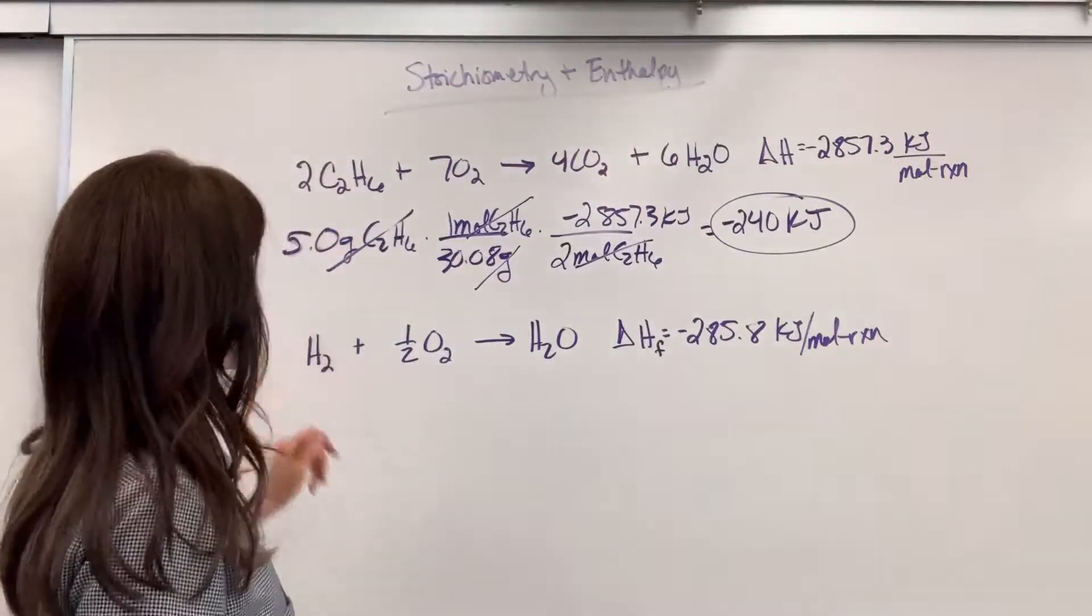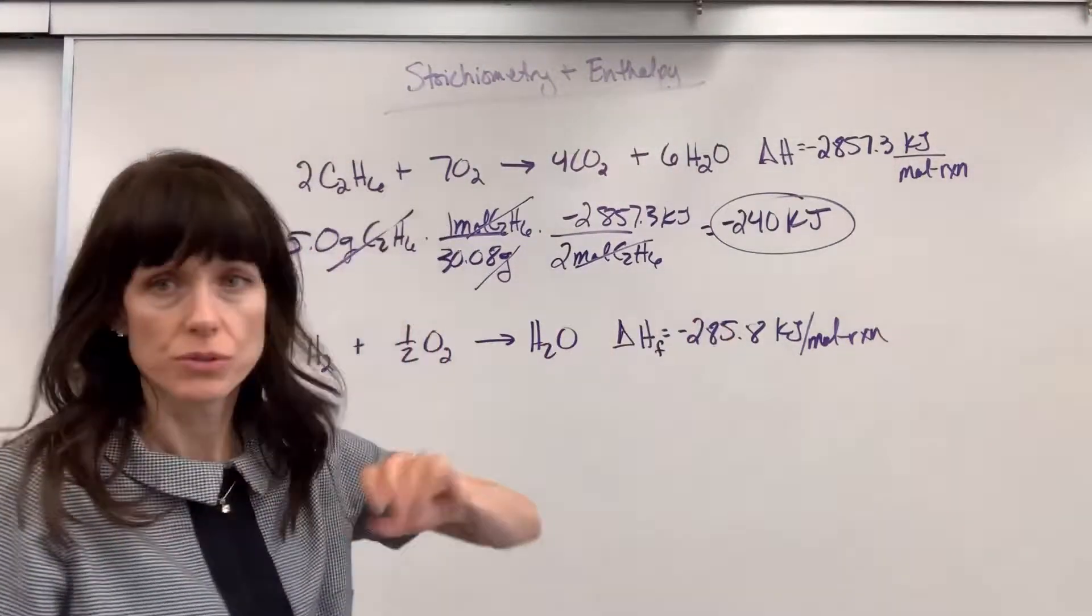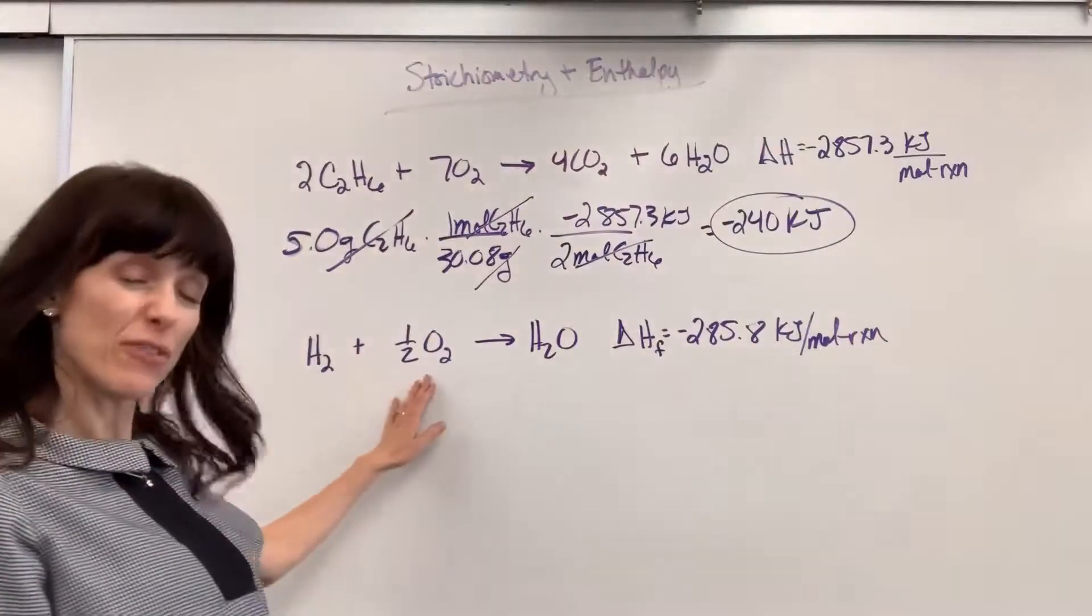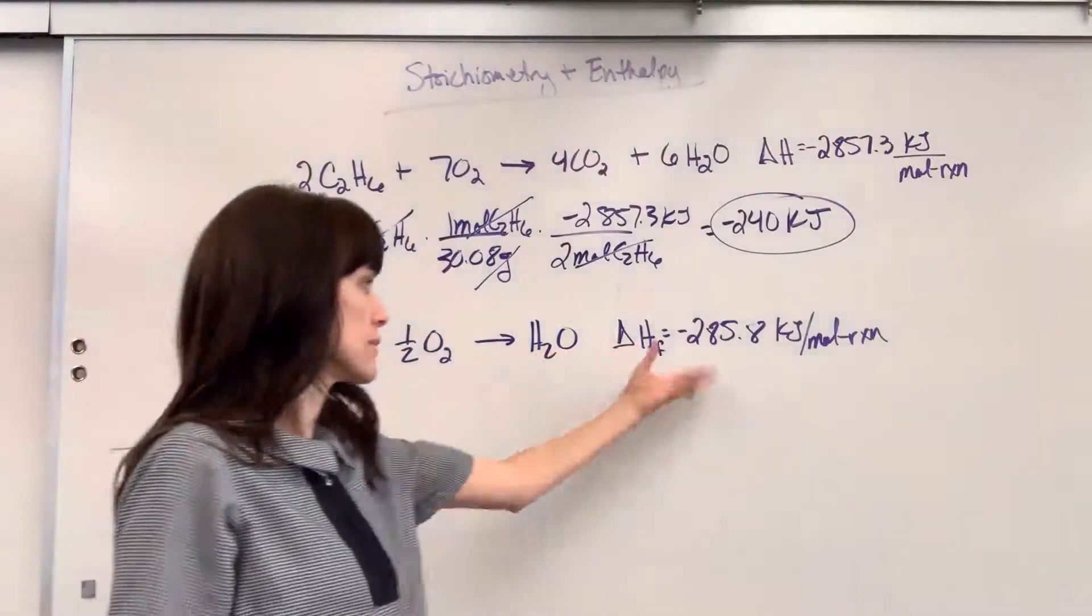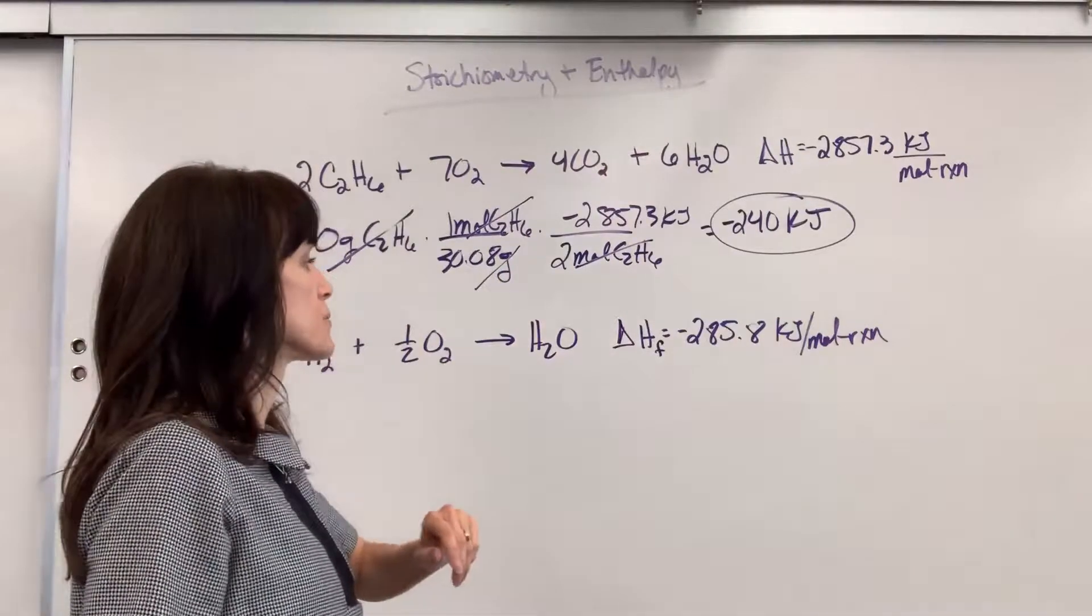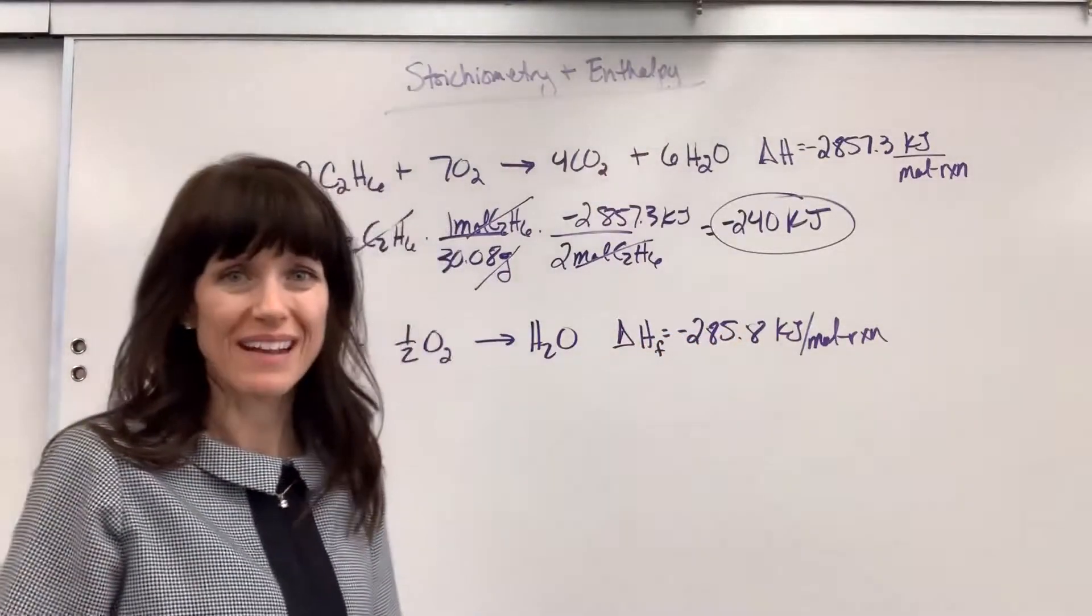When water is formed from its elements, it releases 285.8 kilojoules per mole of reaction. So again, how I read this, one mole of hydrogen produces 285 kilojoules. A half a mole of oxygen in this reaction releases 285. If one mole of water is produced, it releases 285.